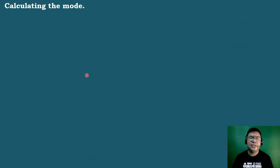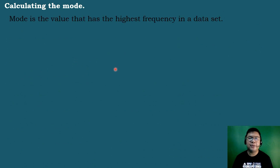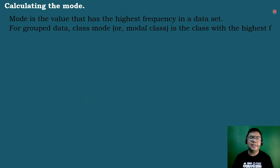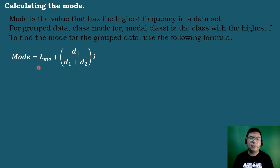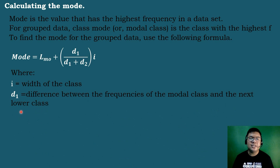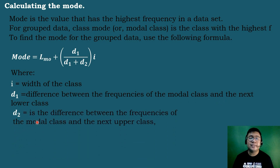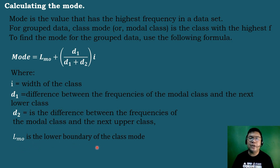To calculate the mode for grouped data, the modal class is the class with the highest frequency. We use the formula: Mode = LB + [D₁ / (D₁ + D₂)] × i, where D₁ is the difference between the modal class frequency and the class below it, D₂ is the difference with the class above it, and LB is the lower boundary of the modal class.